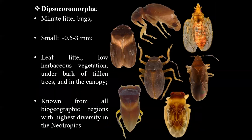The infra-order Dipsochromorpha are commonly known as minute litter bugs due to their small size, ranging from half a millimeter to three millimeters. They are usually found in leaf litter, low herbaceous vegetation, on the bark of fallen trees, and in the canopy. They are also known from all biogeographical regions, with the highest diversity in the Neotropics. I put these pictures here just to show you a piece of their morphological diversity.